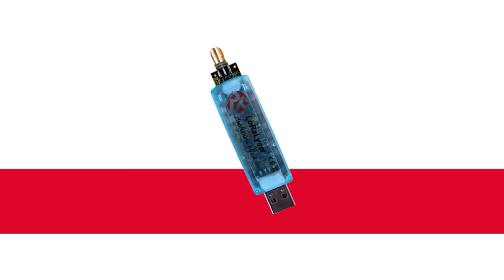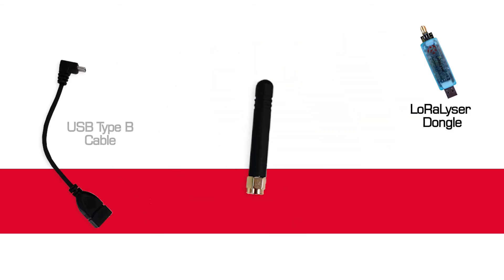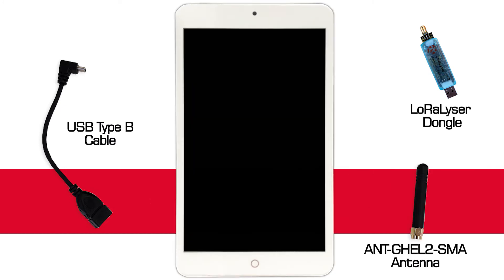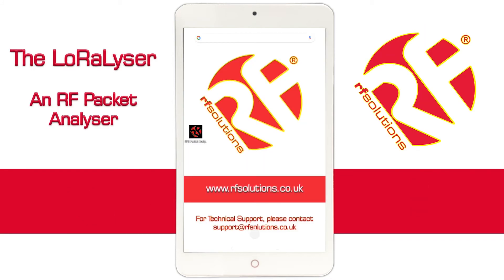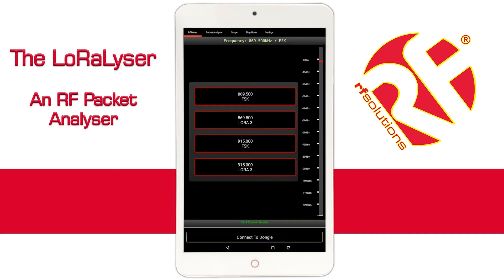Upon receiving the Lorelyzer system, you'll find the Lorelyzer dongle, a USB Type-B cable, the ANTGHEL2 SMA antenna, and a compatible Android tablet. To get started, open up the RF Packet Analyzer app on your Android tablet, plug in your Lorelyzer, and press Connect to Dongle.